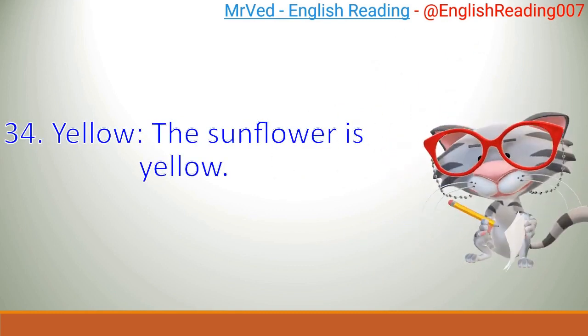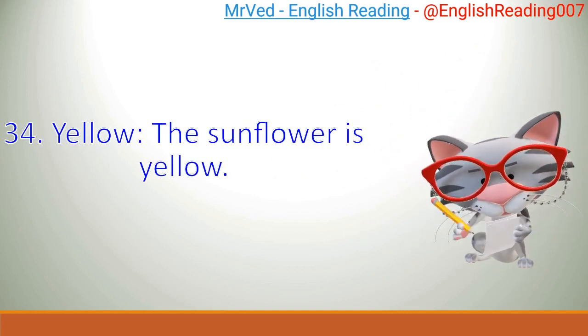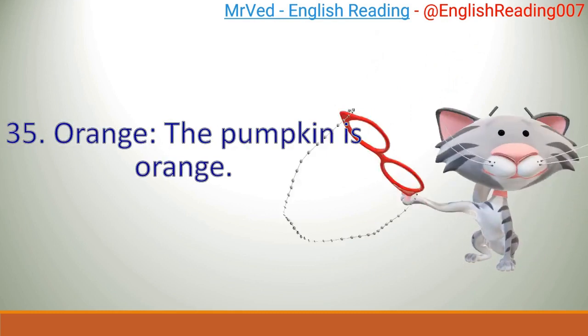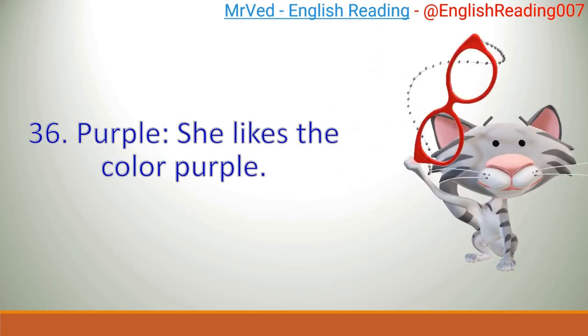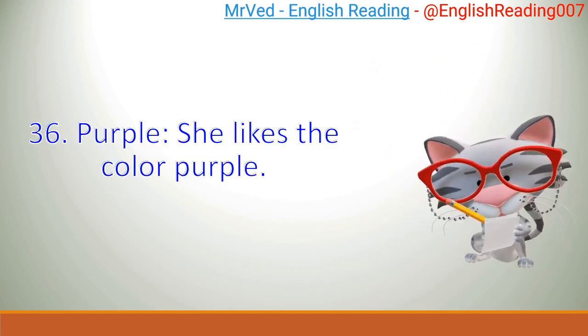34. Yellow. The sunflower is yellow. 35. Orange. The pumpkin is orange. 36. Purple. She likes the color purple.